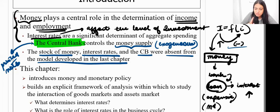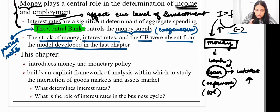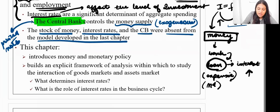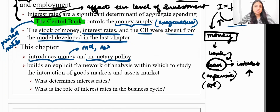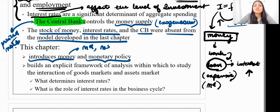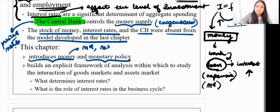Now in this chapter I am going to introduce the concept of money — what is demand of money, what is supply of money — and I'm going to introduce the concept of monetary policy. In the last chapter I was always doing fiscal policy: increasing government expenditure, changing taxes, changing transfers. But this chapter is more concerned with changing monetary policies, bringing changes in money demand and money supply.